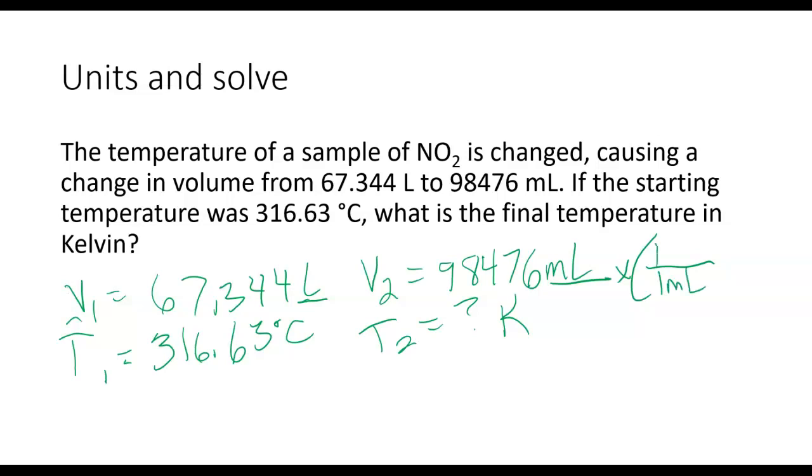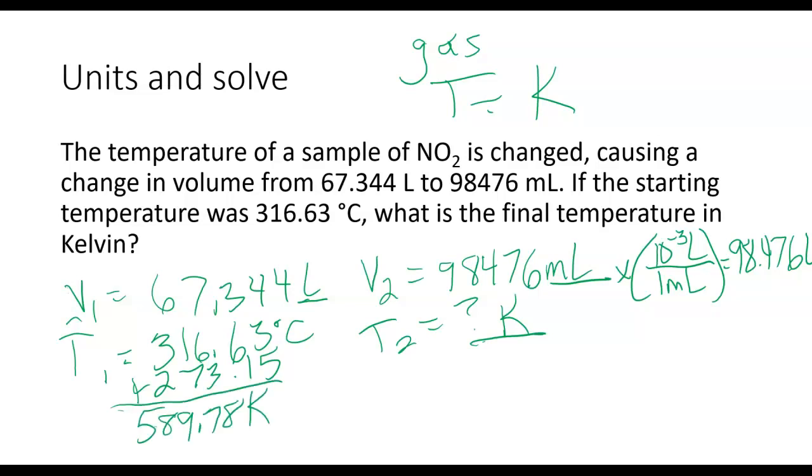So I'm going to convert this milliliters into liters. So I'm going to multiply by - I have for every one milliliter, I have 10 to the negative third liters. So I'm going to get 98.476 liters for my V2. For my temperature, notice I'm looking for Kelvin for my answer. Also, whenever I'm doing a gas law, the temperature must be in Kelvin. Remember, you cannot do any other unit. To convert it to Kelvin, I'm just going to add 273.15. So my T1 should be 589.78 Kelvin.